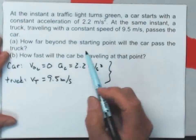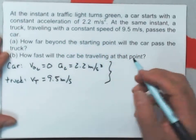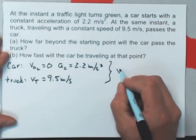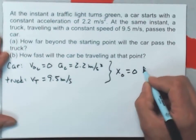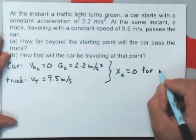For both of them, they start from the same point, the stoplight at time zero. So I'm going to let X-naught equal zero for both because they start from the same place.